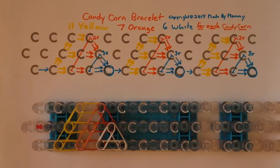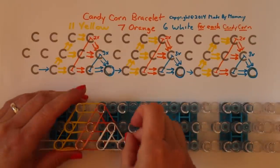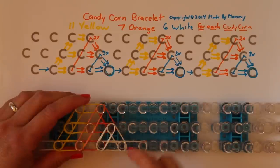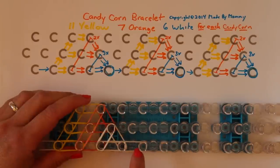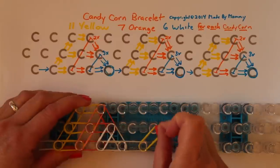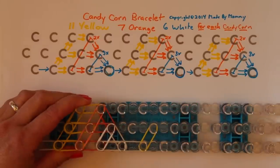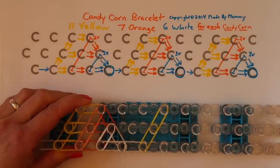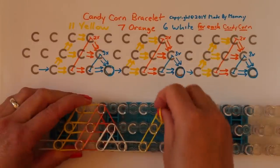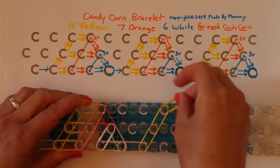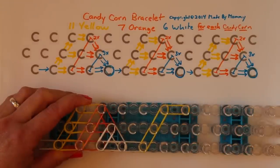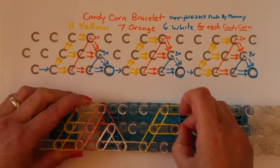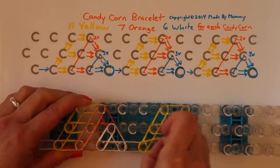And now to add the next candy corn, you just repeat the pattern another time. Single white that connects the two together. Then two yellow to the side, two yellow to the side, two yellow going forward. Two yellow going forward again, and another.